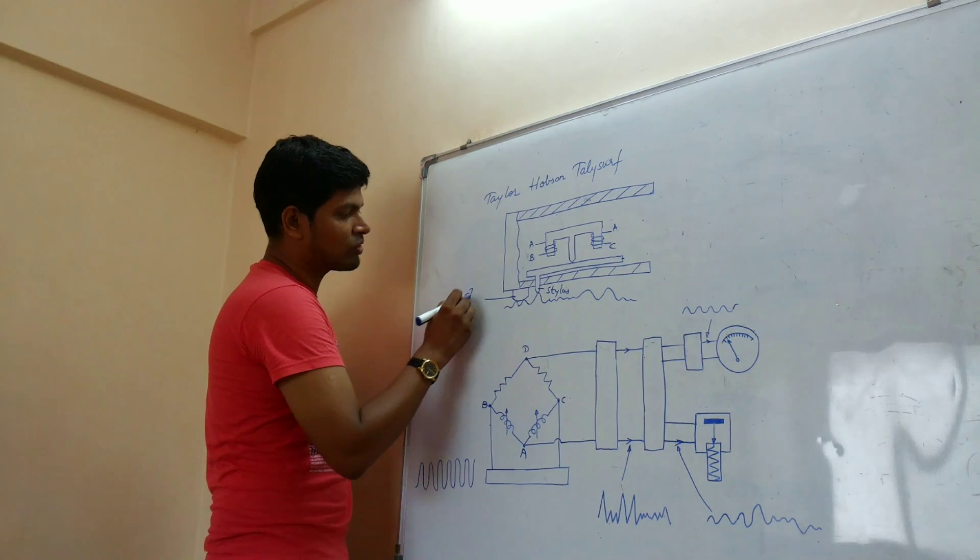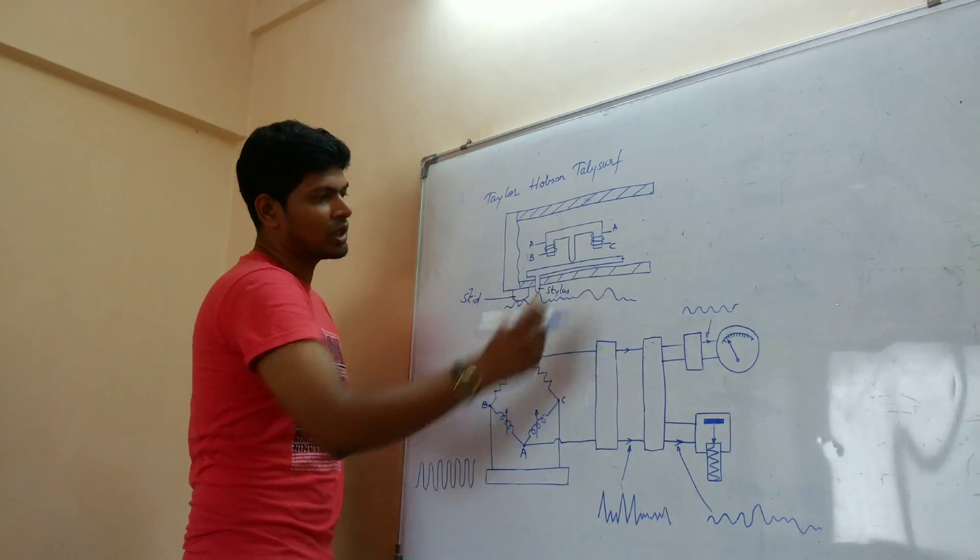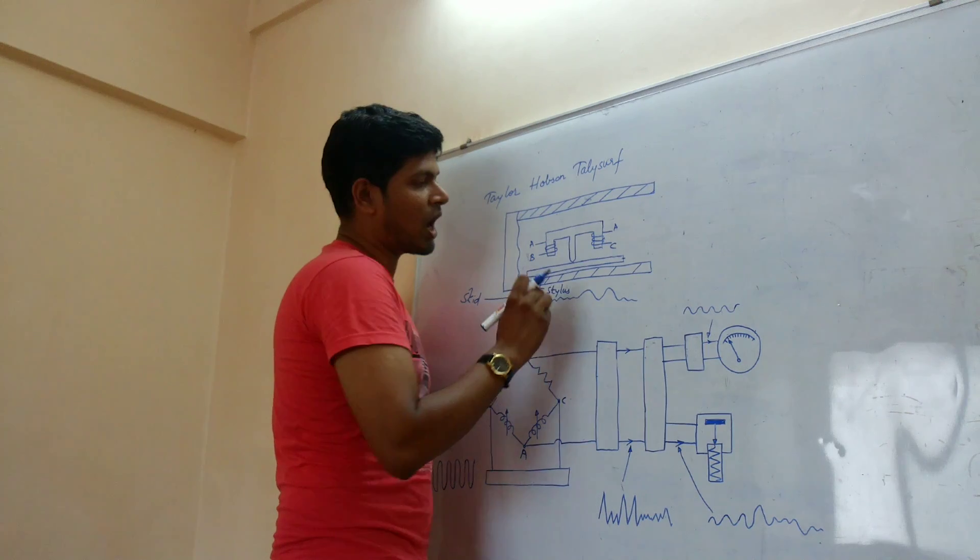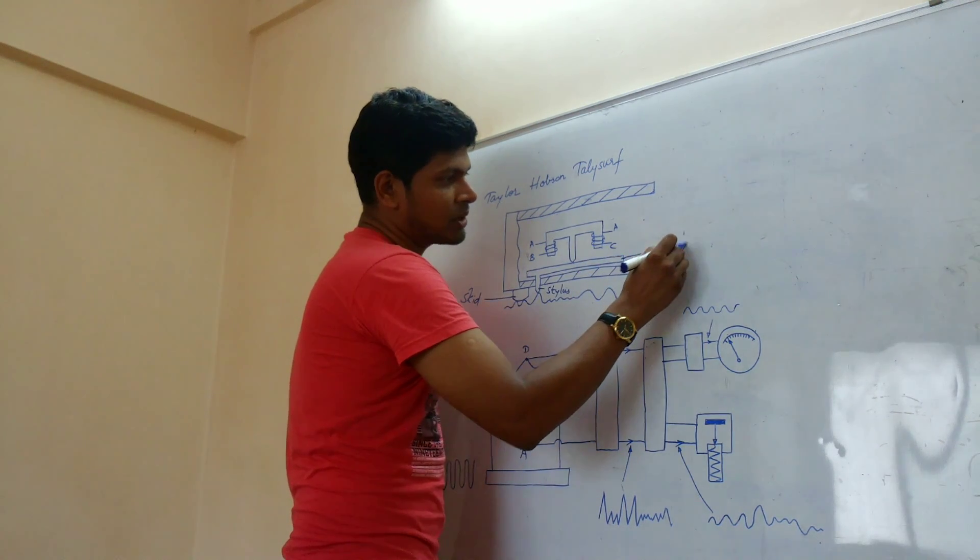And this is the skid which will move along with the stylus. And stylus is attached to the arm which forms the armature.